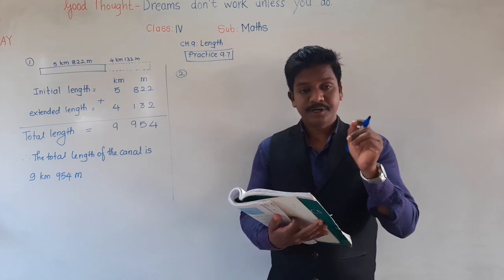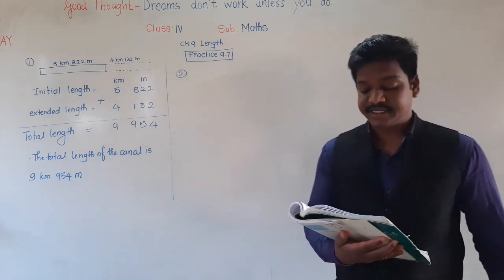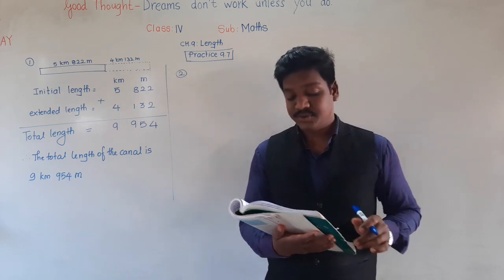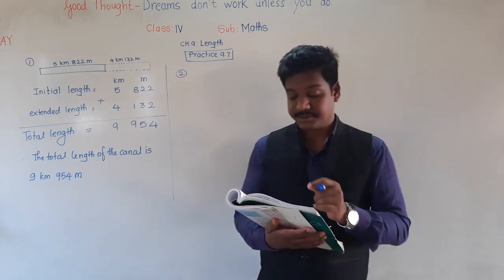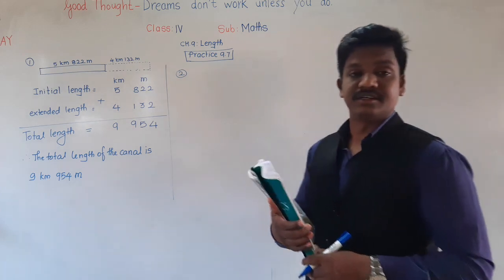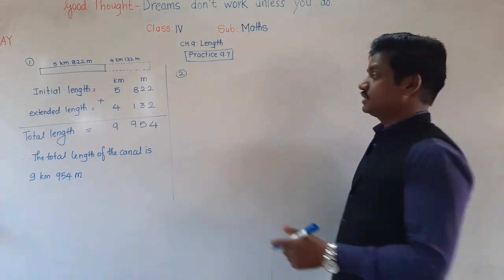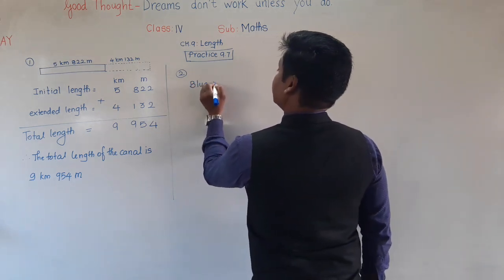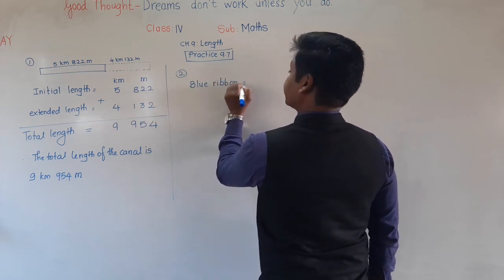Second question. A shopkeeper purchased 116 meter 80 centimeter blue ribbon and 223 meter 75 centimeter red ribbon. How much ribbon did he purchase altogether? Two types of ribbon he has purchased — blue ribbon and red ribbon.